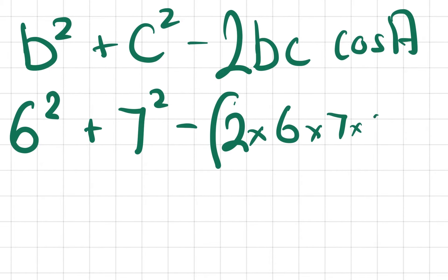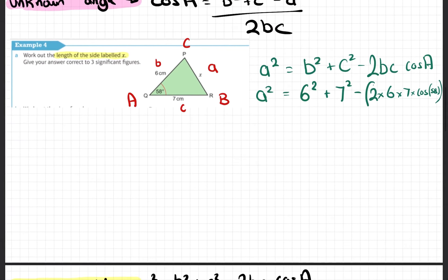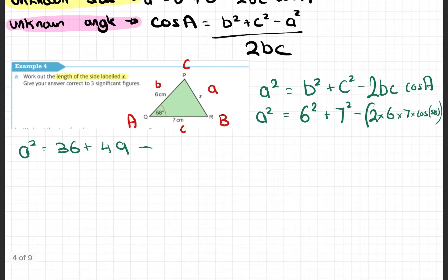A squared equals 6 squared plus 7 squared minus 2 times 6 times 7 times cos 58. So a squared equals 36 plus 49 minus, I'm gonna put my calculator now, 2 times 6 times 7 times cos 58, that's 44.51321.